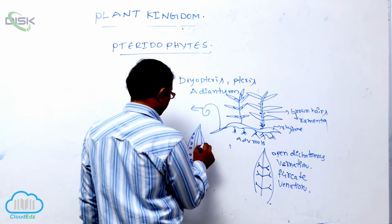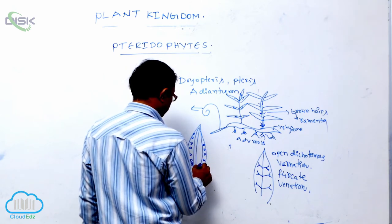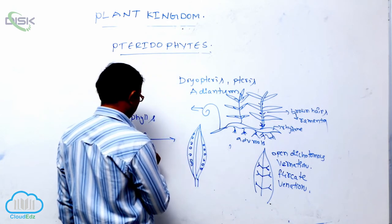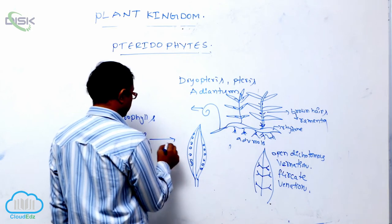Sporangia are grouped together, forming structures known as sori.